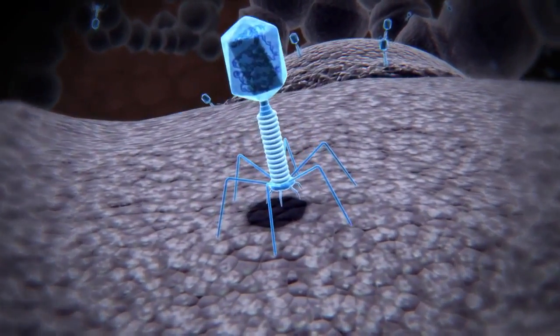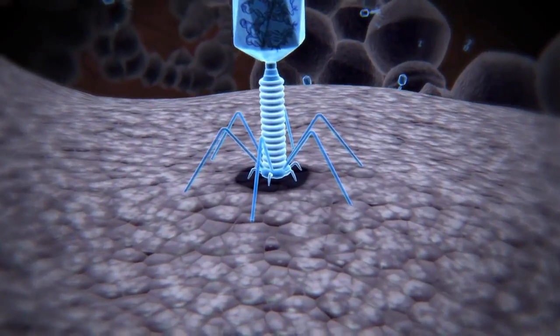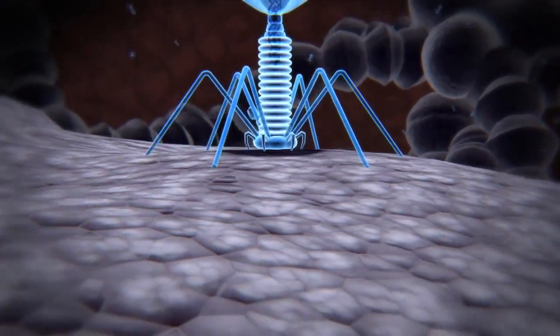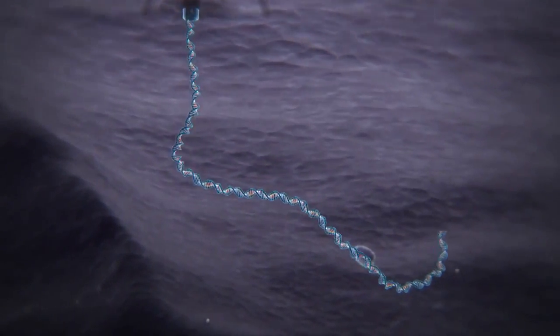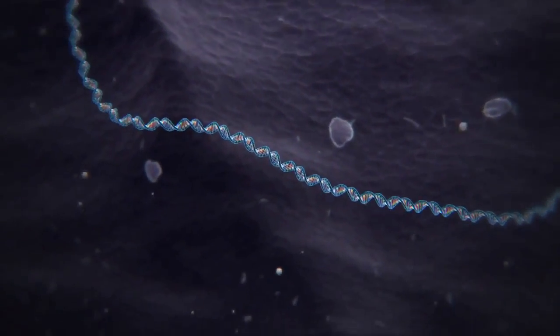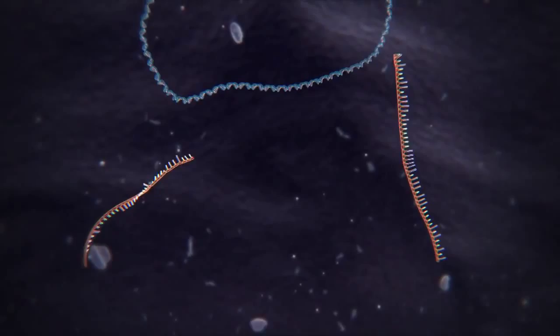The CRISPR method is based on a natural system used by bacteria to protect themselves from infection by viruses. When the bacterium detects the presence of virus DNA, it produces two types of short RNA.